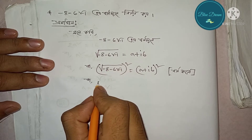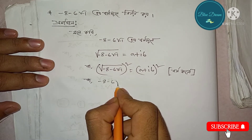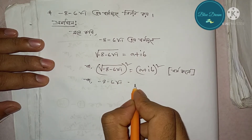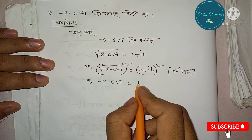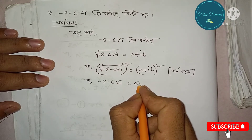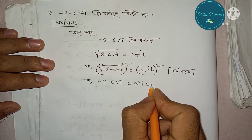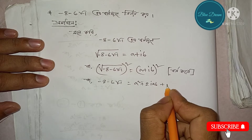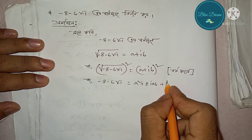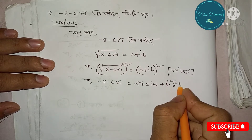Root over (minus 8 minus 6 root over minus 1) is equal to (a plus ib) whole square, which expands to a² minus b², plus 2ab, into i.